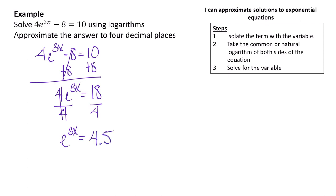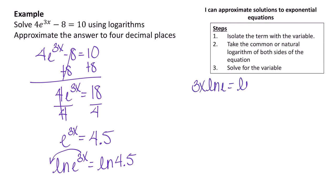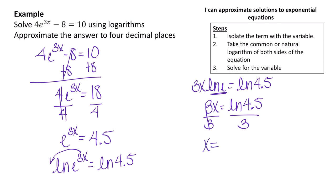Since we have a base of e, I'll take the natural log of both sides: the natural log of e to the 3x equals the natural log of 4.5. I'll wait until the last step to use the calculator to prevent rounding errors. Using the power property, I bring 3x down in front: 3x times the natural log of e equals the natural log of 4.5. Since the natural log of e is 1, we get 3x equals the natural log of 4.5. Dividing both sides by 3 gives x equals the natural log of 4.5 divided by 3, which rounds to 0.5014.